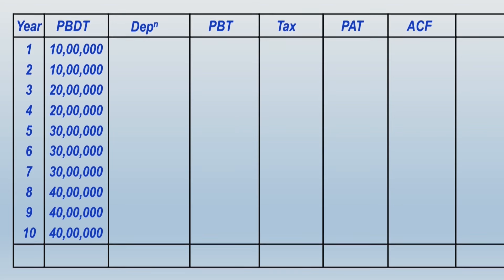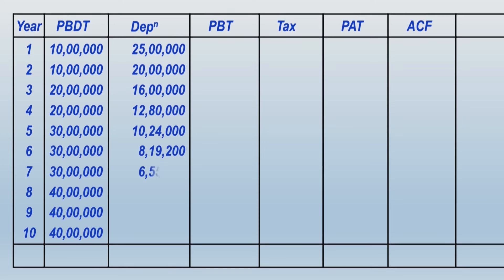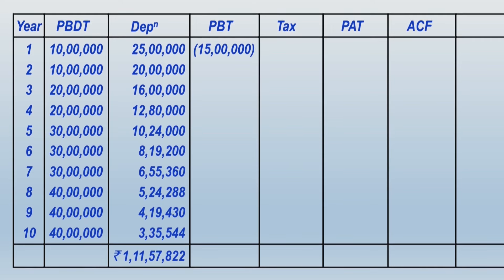In regards to depreciation, it is charged on WDV basis — the depreciation rate is 20 percent per annum and the initial cost of the project assets was 1 crore 25 lakhs. Each year's depreciation computed through WDV basis gives these amounts. Don't forget to take the total of the depreciation column — that is important. From profit before depreciation and tax, when you subtract depreciation, you get profit before tax. Notice that the profit before tax is a negative amount in the early years — in other words the depreciation has remained unabsorbed to the extent of 15 lakhs.